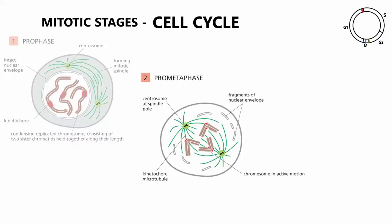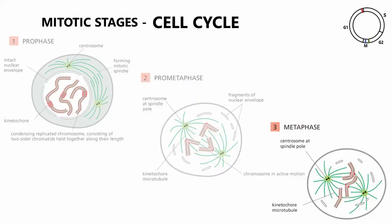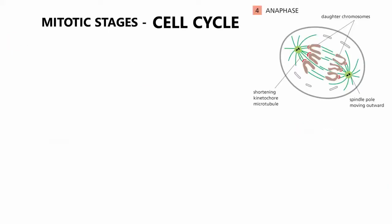In the following prometaphase, the nuclear envelope breaks down and chromosomes attach to the spindle and start the active movement. In the metaphase, the chromosomes are finely aligned at the equator of the spindle and the kinetochores are attached to all sister chromatids. At anaphase, sister chromatids separate and spindle centrosomes move further apart.